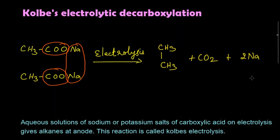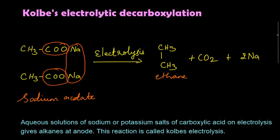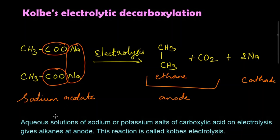So from sodium acetate on electrolysis we get ethane, carbon dioxide, and sodium. Ethane and carbon dioxide get deposited at the anode, and sodium gets deposited at the cathode.